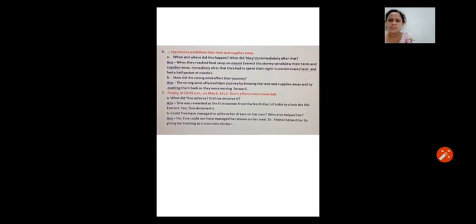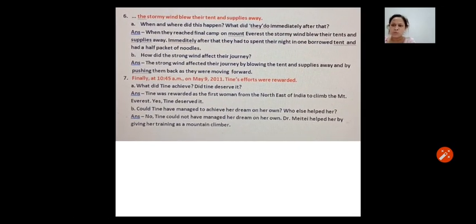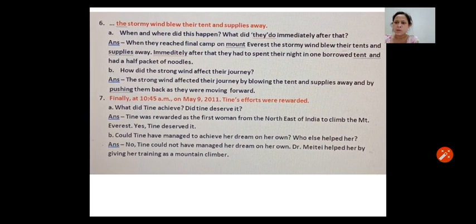Number 6, The stormy wind blew their tent and supplies away. A. When and where did this happen and what did they do immediately after that? Answer is, When they reached final camp on Mount Everest, the stormy wind blew their tents and supplies away. Immediately after that, they had to spend the night in one borrowed tent and had a half packet of noodles. B. How did the strong wind affect their journey? Answer is, The strong wind affected their journey by blowing the tent and supplies away and by pushing them back as they were moving forward.